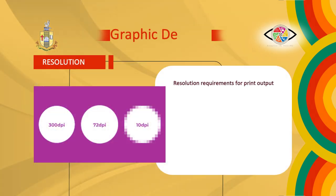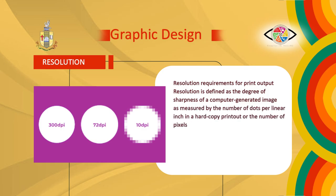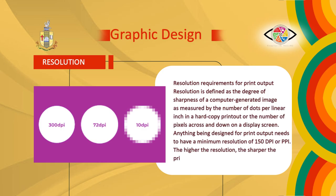When a design is going to print, we need to consider the main factor: resolution. Resolution is defined as the degree of sharpness of a computer-generated image, as measured by the number of dots per linear inch in a hard copy printout, or the number of pixels across and down on a display screen. Anything being designed for printout needs to have a minimum resolution of 150 dpi or tpi. The higher the resolution, the sharper the printed image will be.